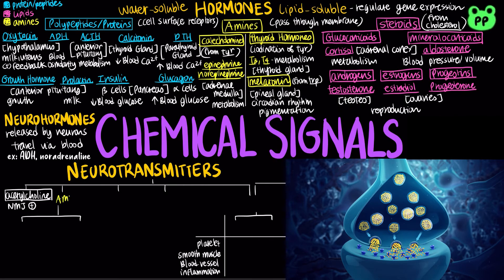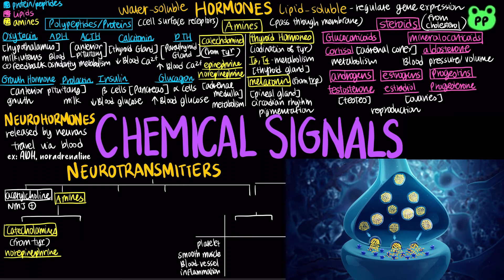Neurotransmitters that are derived from amino acids include catecholamines, which are derived from tyrosine, which includes norepinephrine, which can be either excitatory or inhibitory. Norepinephrine is both a hormone and a neurotransmitter. Dopamine is another type of catecholamine neurotransmitter, which is generally excitatory and plays a huge role in mediating pleasure in the brain.